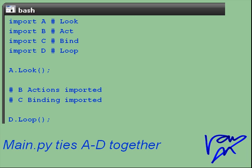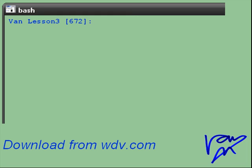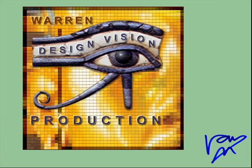Main.py ties A through D together. Then we run the main program to produce our results. Download this code from WDV.com. That's all.